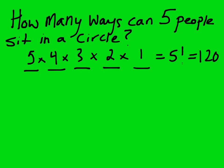However, in a circle, it's a little bit different. Let me just draw you a couple of examples. So if you have five people sitting around a circle, one, two, three, four, five. So let's just call them A, B, C, D, and E.